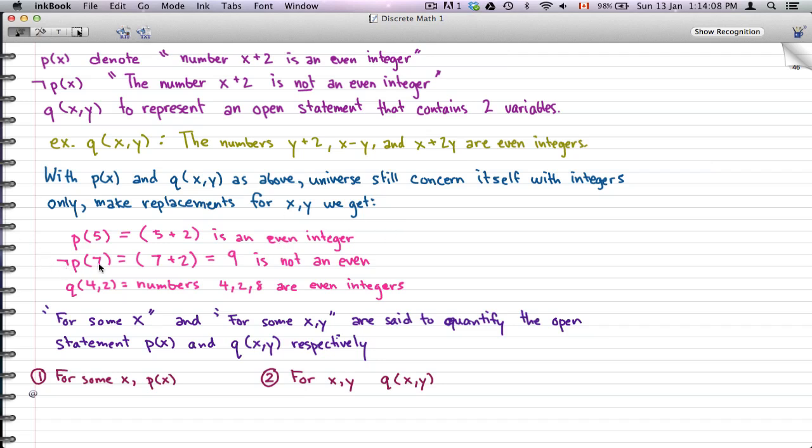Now p(7): 7 plus 2, replacing X by 7, equals 9 is not an even integer. So this one's true.